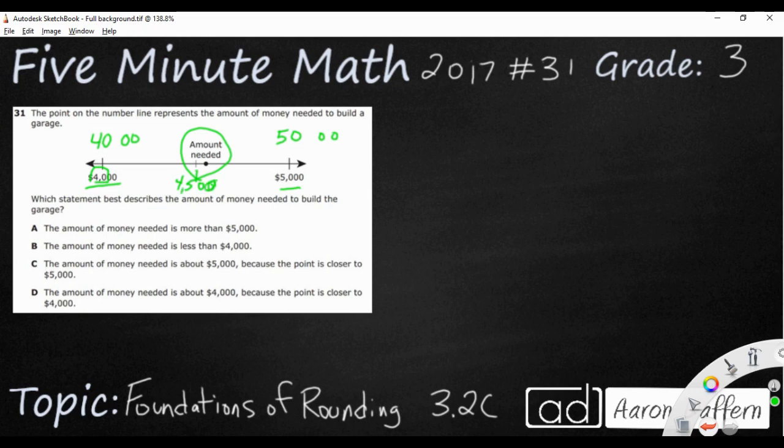Let's look at our answers and see what this has to do with rounding. The amount of money needed is more than 5,000? Well, if it's more than 5,000, it would be over here somewhere. It is not more than 5,000. It is less than 5,000.